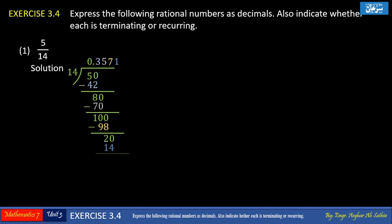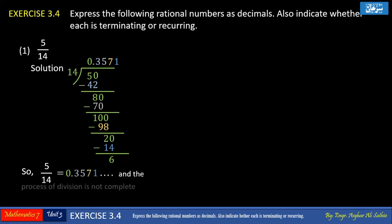14 cannot divide 2, so we put 0 on the right making it 20. 1 times 14 is 14; subtracting 14 from 20 gives 6. The division process will not complete. The decimal of rational number 5 upon 14 is 0.3571... and it is a non-terminating decimal.